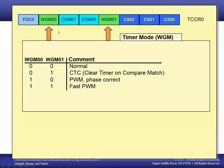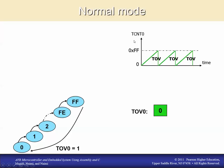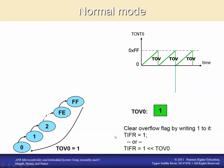The normal mode graph shows TCNT0 as a function of time. As time marches along, the timer counter value keeps increasing until it reaches its maximum — hex FF for an 8-bit timer — and then on the next time step it drops back down to zero. When it hits zero, the overflow flag is set, and it keeps going. That flag stays set until something resets it — either manually by writing to this bit, or automatically if using interrupts.